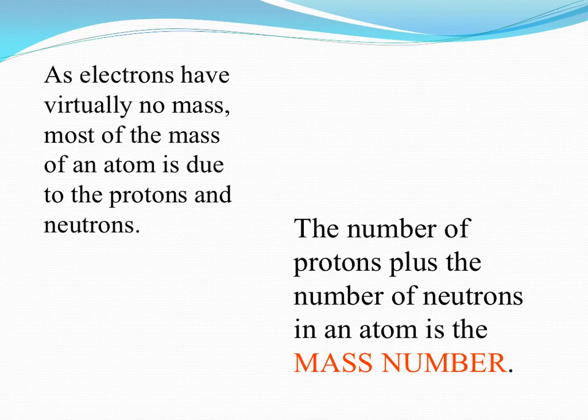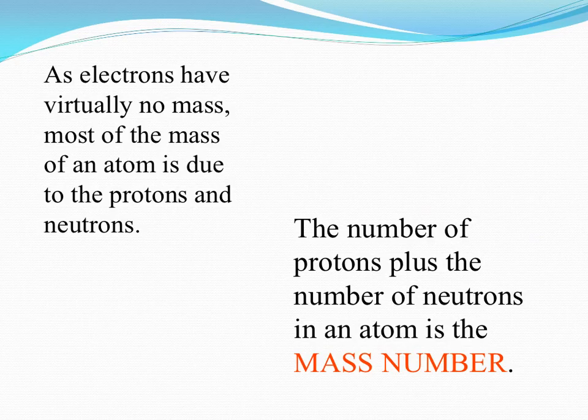The mass of an electron is very small compared to the mass of protons and neutrons, so they basically have no impact on the overall mass of an atom. Most of the mass of an atom is due to protons and neutrons. So the mass number of an atom is defined as the number of protons plus the number of neutrons in the atom.